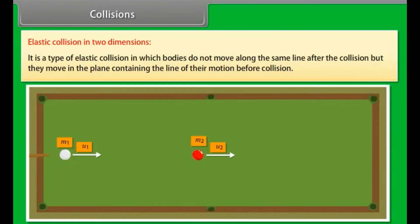Elastic collision in two dimension. It is a type of elastic collision in which bodies do not move along the same line after the collision but they move in the plane containing the line of their motion before collision.